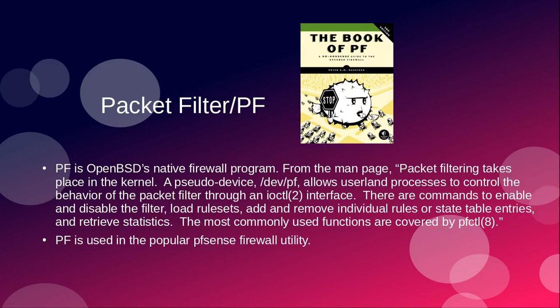Packet Filter, or PF. PF is OpenBSD's native firewall program. From the man page: packet filtering takes place in the kernel. A pseudo device, /dev/pf, allows userland processes to control the behavior of the packet filter through an IO control interface. There are commands to enable and disable the filter, load rule sets, add and remove individual rules or state table entries, and retrieve statistics. The most commonly used functions are covered by pfctl. So OpenBSD has its own built-in firewall called Packet Filter.